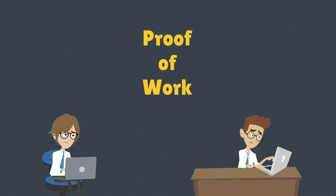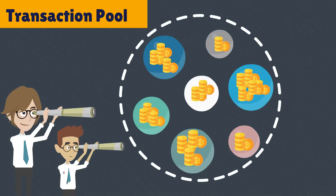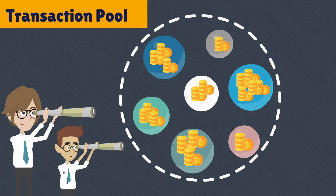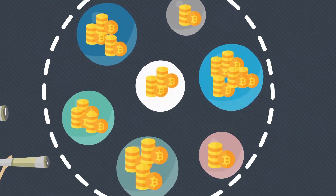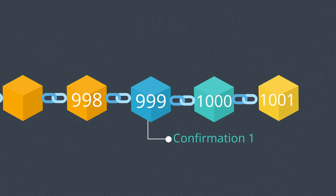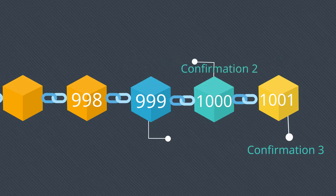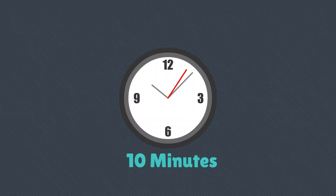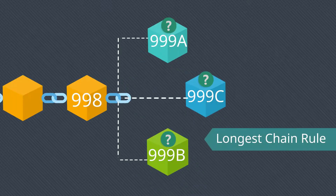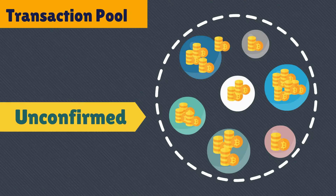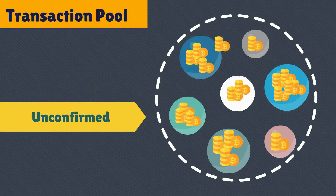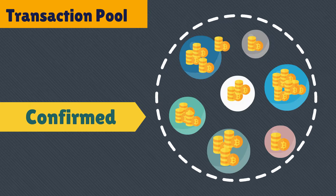So what happens to blocks 999a and 999b? They have to create the proof of work again with a new set of transactions from the transaction pool. Each confirmation represents adding each block, and each confirmation will take on an average of around 10 minutes or more per block. Applying the longest chain rule and the proof of work, unconfirmed transactions will become confirmed transactions and be added to the blockchain ledger.